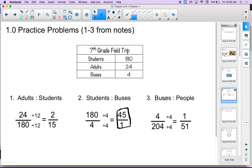The last one, buses to people. This one gets a little bit tricky because there's no category in our table that says people. So, we had to have the good sense to kind of say, well, students and adults are both people. So, I'm going to add them together. That gets me 204. 4 buses, 204 people. If I simplify, I get the ratio 1 to 51. So, remember, these are ratios. We're going to read them with the word to. 1 to 51. 45 to 1. 2 to 15.